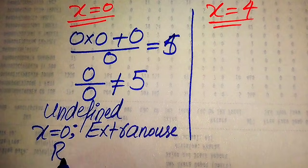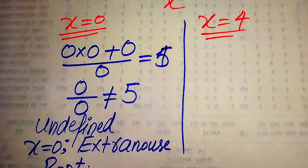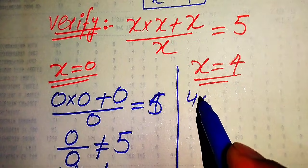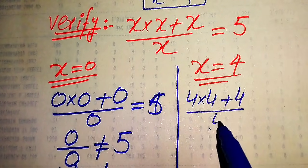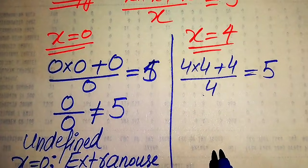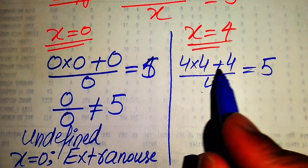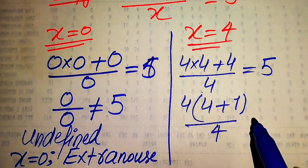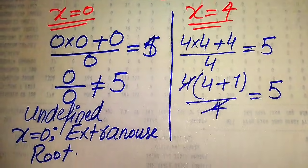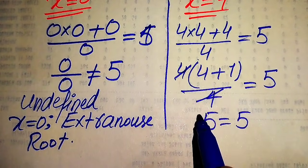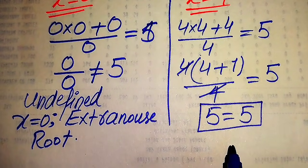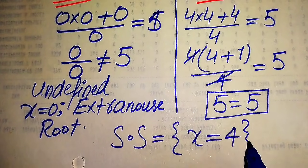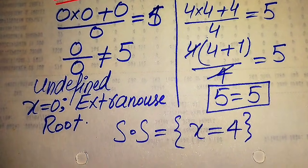Now we check the second root, x equals 4. Substituting gives 4 multiplied by 4 plus 4, all divided by 4, equals 5. We take 4 as a common factor in the numerator to get 4 times (4 plus 1) divided by 4 equals 5. The 4s cancel, leaving 5 equals 5. Both sides are equal, so x equals 4 is the valid solution from the first method.